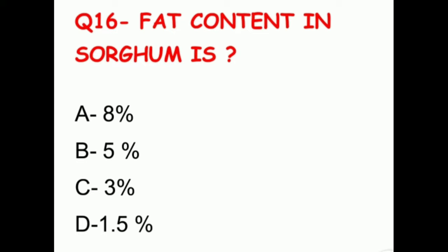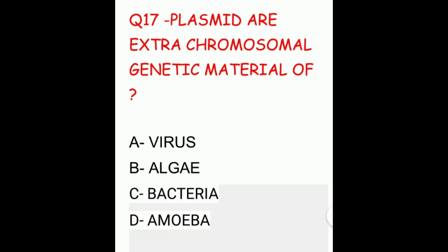Question sixteen: fat content in sorghum is. The options are 8%, 5%, 3%, or 1.5%. The correct answer is 3%. Question seventeen: plasmid, or extra-chromosomal genetic material, belongs to which organism? The options are virus, algae, bacteria, or amoeba. The correct answer is bacteria.